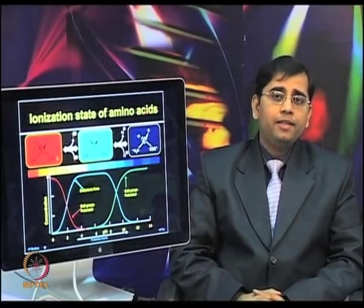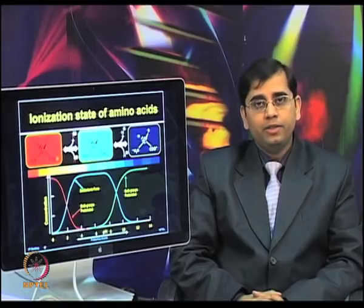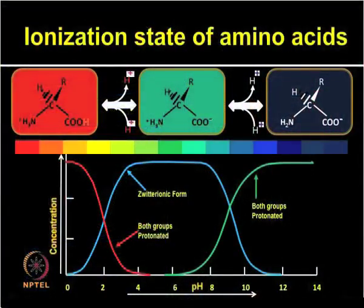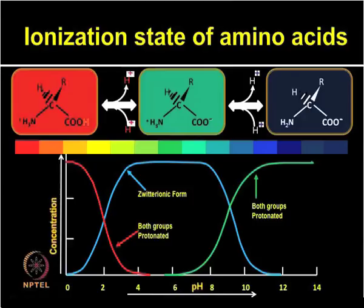Let us now talk about the ionization state of amino acids. The ionization state varies with pH. In acidic solution, the amino group is protonated (NH3+) and the carboxylic group is undissociated (COOH). At neutral pH, amino acids exist as dipolar ions or zwitterions — the amino group is protonated (NH3+) and the carboxylic group is deprotonated (COO−). This dipolar form can exist up to pH 9. At basic pH, the protonated amino group loses its proton and forms NH2.